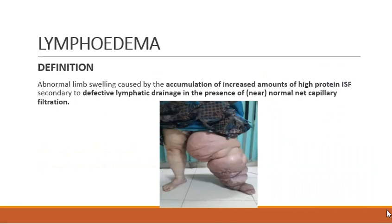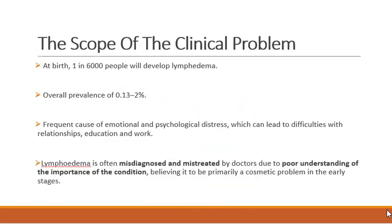Regarding the definition, lymphedema is defined as abnormal limb swelling caused by accumulation of an increased amount of high-protein interstitial fluid. This accumulation is because of defective lymphatic drainage in the presence of normal or near-normal net capillary filtration.